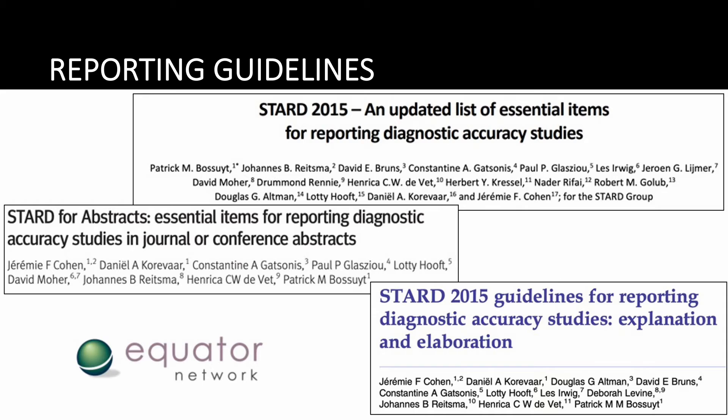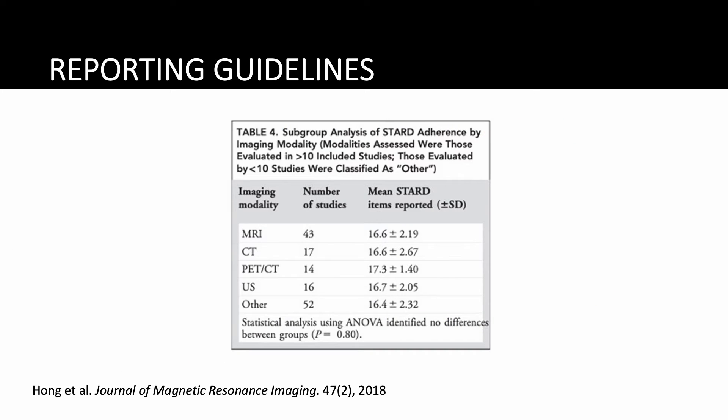When it comes to reporting of primary diagnostic accuracy studies, an important concept is the Standards for Reporting of Diagnostic Accuracy, or STARD — a 30-item checklist of the minimum essential items to be reported to allow readers to assess generalizability, applicability, validity, and potential for bias. These guidelines are widely available, open access, and strongly endorsed in the instructions to authors from most major radiology journals. So it may come as a surprise that published primary DTA studies still have serious deficits in reporting based on STARD.